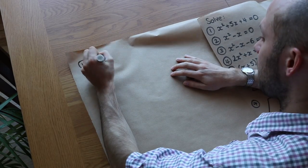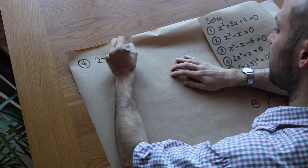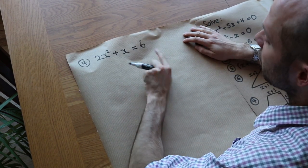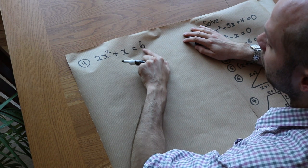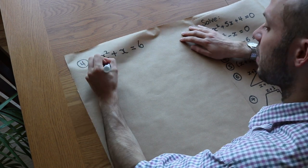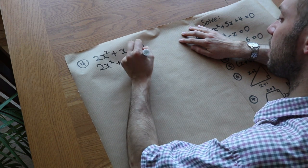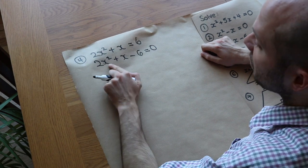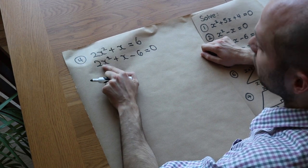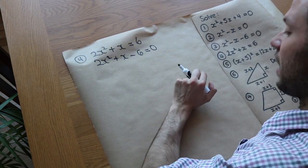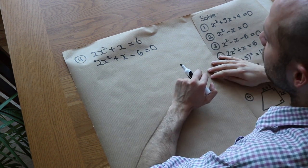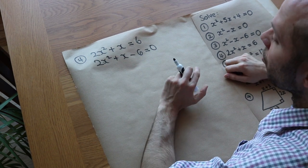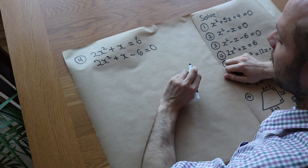Question four: we've got two x squared plus x equals six. Notice we don't have zero on one side, so we subtract six from both sides to get two x squared plus x minus six equals zero. There are two ways to factorize when there's a number in front of the x squared. We could intelligently guess the brackets or we can split the middle term. I'm going to split the middle term.